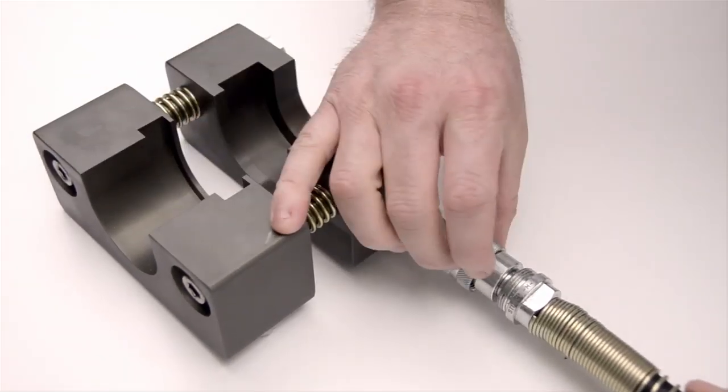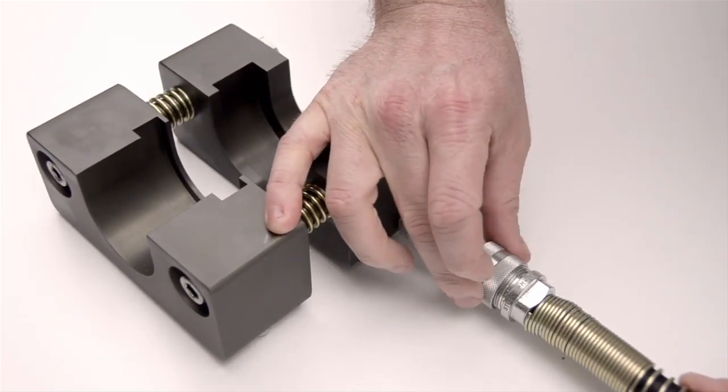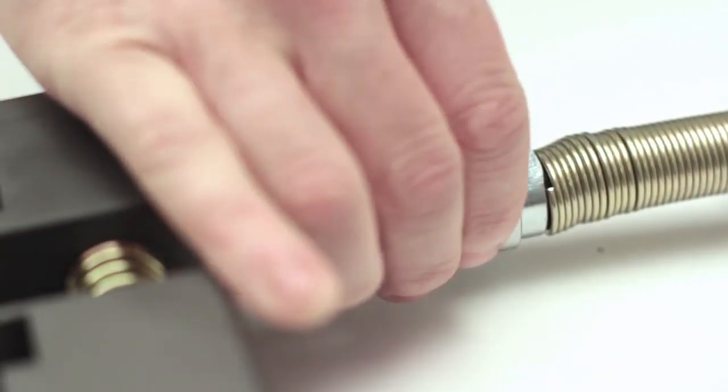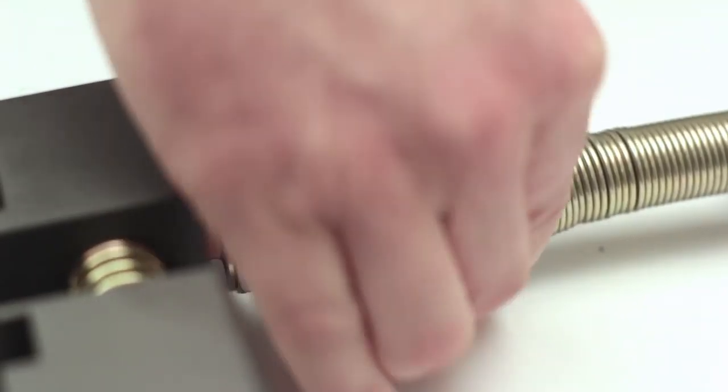The next stage is to connect the pump hose to the linear tool. Make sure the hose connection is fully home and the locking nut is tightened to ensure the correct operation of the tool.